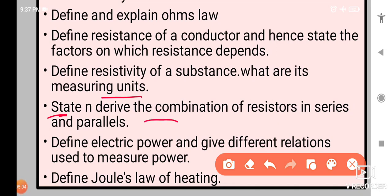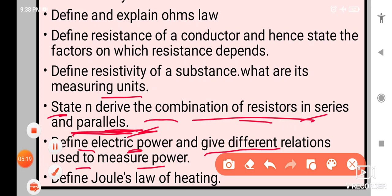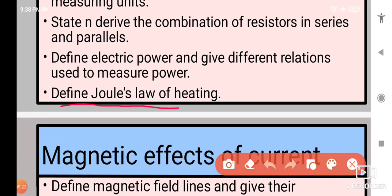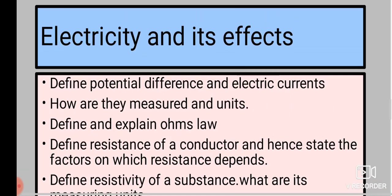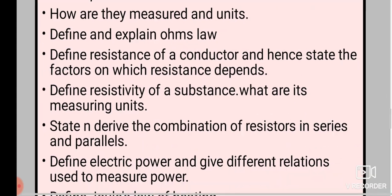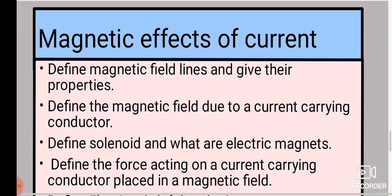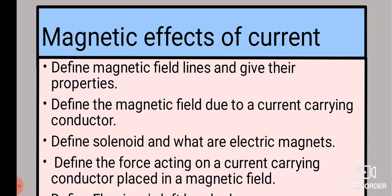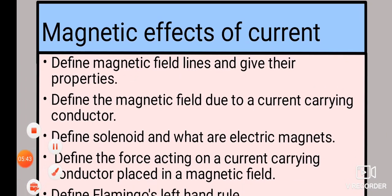Then state and derive the combination of resistors in series and parallels. I mean, these all questions we have been seeing every year. So they can be likely asked in the examination. Define electric power and give different relations used to measure power. Then define Joule's law of heating. These all topics were which I think according to me are important in this chapter. Okay? All these topics I have given, I am repeating again, it's just out of my experience which I think is important. 100% this will be the paper I don't know but 90% chances are that it can be like this.